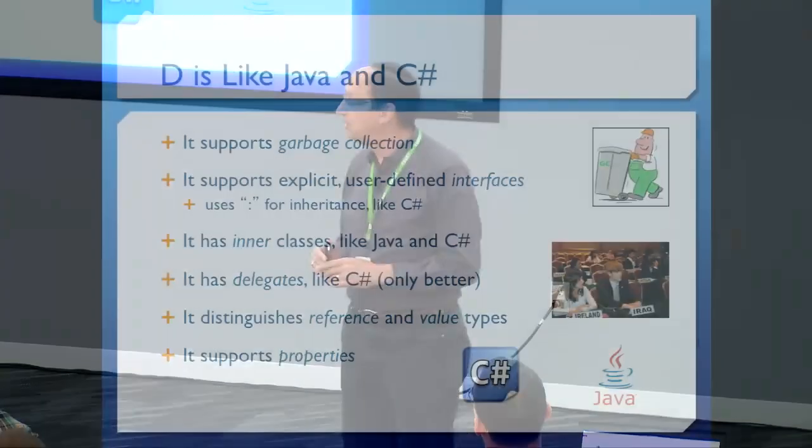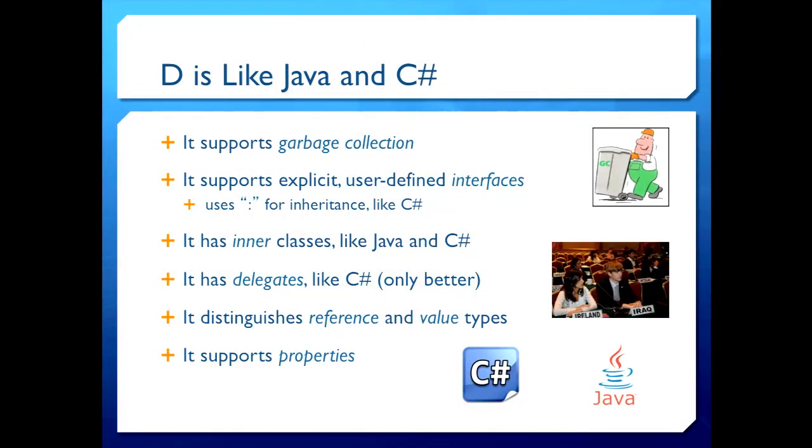The next thing I tell them is D is also kind of like Java and C Sharp. You know, it supports objects. It has the mother of all classes object. It has explicit user-defined interfaces. The inheritance model looks similar to C Sharp. It has inner classes. It has delegates, only they're better, in my opinion. A little more flexible. And here's my picture of delegates. So, you know, I thought that was nice. And, of course, it distinguishes between reference and value types like C Sharp does, and it supports properties. So this will put some people at ease that know Java and C Sharp.